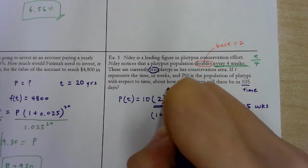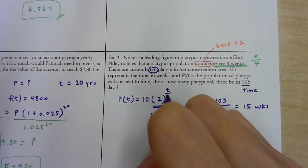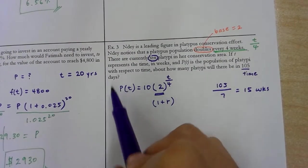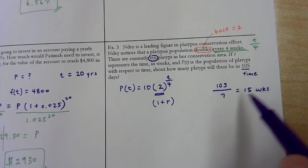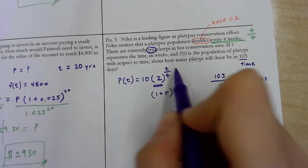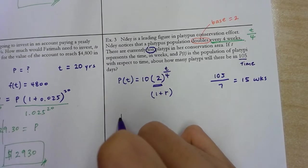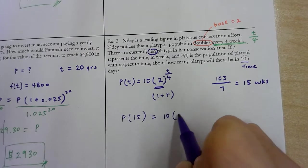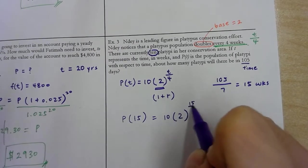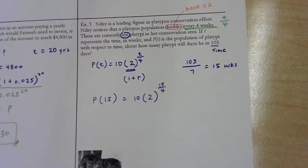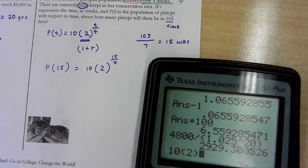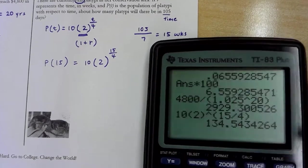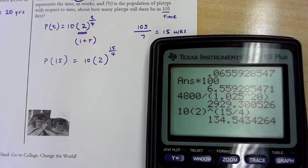And of course, t over 4. Now, what I've got to do is this is asking, find me the output when input is 15 for this function. So I'm going to do P(15) = 10(2)^(15/4). I'm just going to type it into the calculator. Bam!